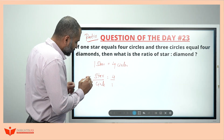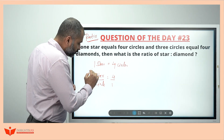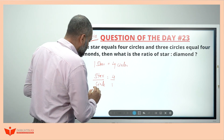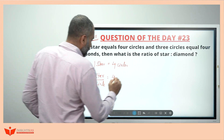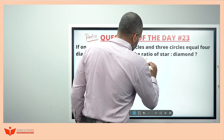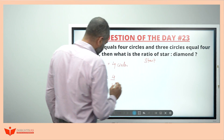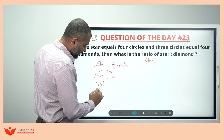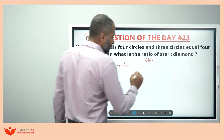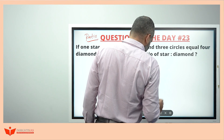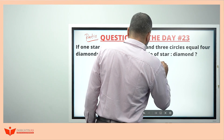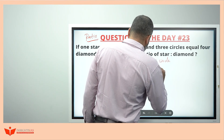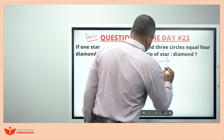Ratio can be written in the form of a is to b, or a by b — they are one and the same. So this means star is four and circle is one. The ratio of star to circle is four to one.